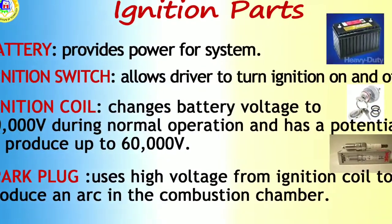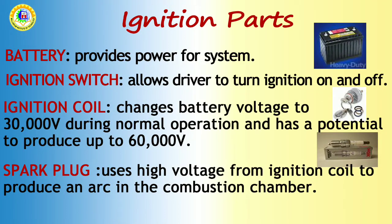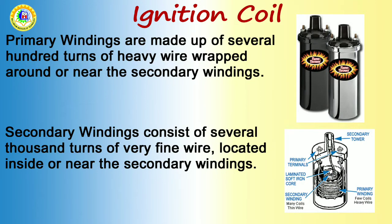The basic components of the ignition system are: First, the battery, which provides the power to run the system. Next, the ignition switch, which allows the driver to turn the system on and off. Next, the primary coil, which produces the magnetic field to create the high voltage in the secondary coil. There are two types of coil winding: primary winding and secondary winding, working just like a transformer with an iron core to produce the magnetic field.